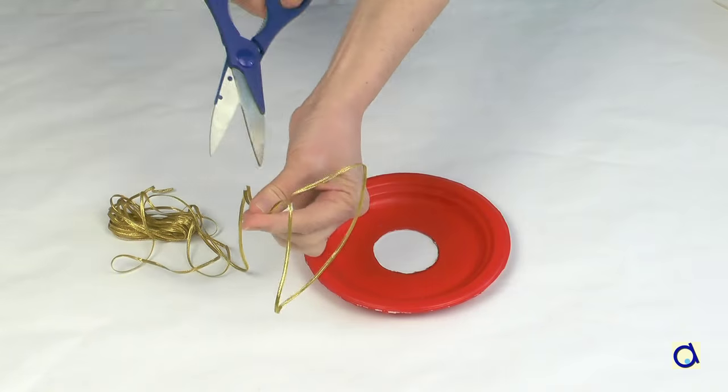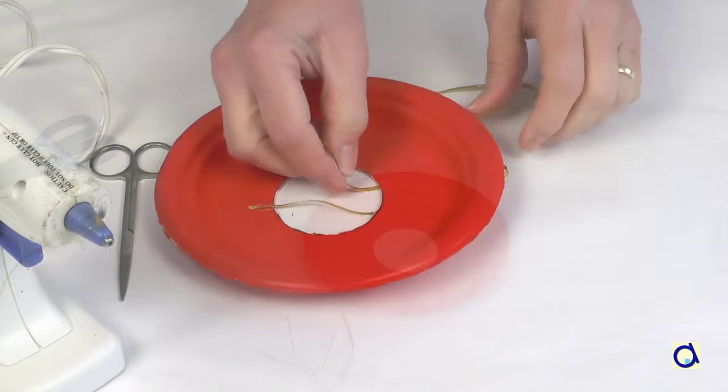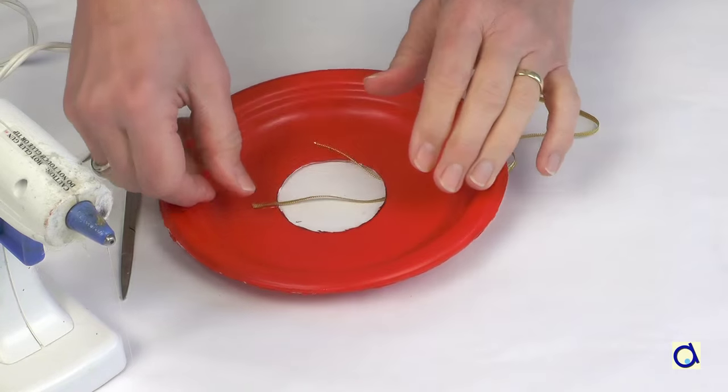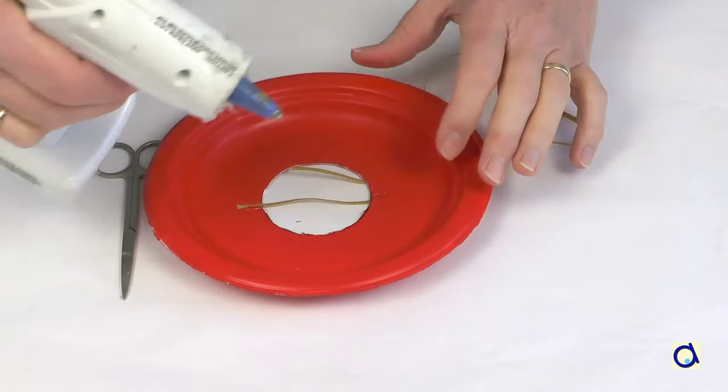Cut a piece of gold ribbon to form the handle of your lantern. Glue the ends of the ribbon on either side of the hole in the plate.